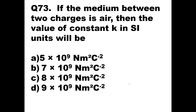Question number 73: If the medium between two charges is air, then the value of constant K in SI units is what? The standard value of constant K in SI units when the medium is air is 9×10⁹ Newton meter squared per Coulomb squared. Option D is the right answer.